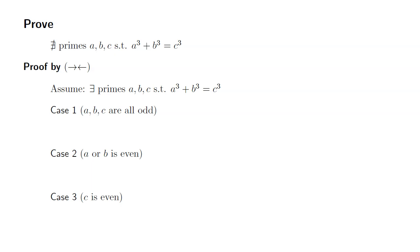I'm going to eliminate all three cases. Let's start with Case 1: a, b, and c are all odd. Since a and b are both odd, a³ is odd and b³ is odd. So we have odd + odd, which is even.